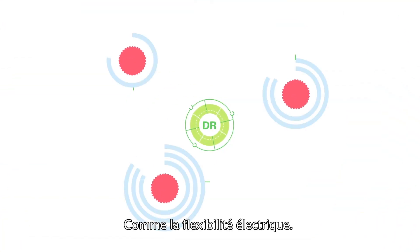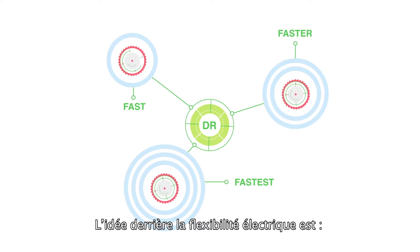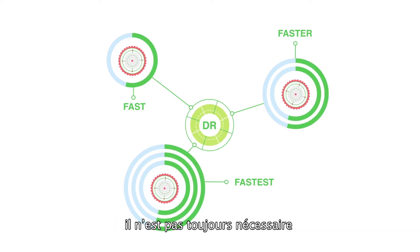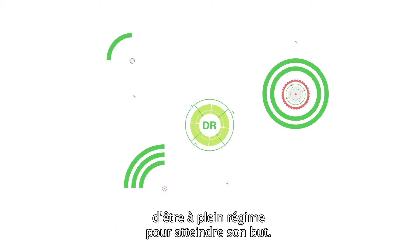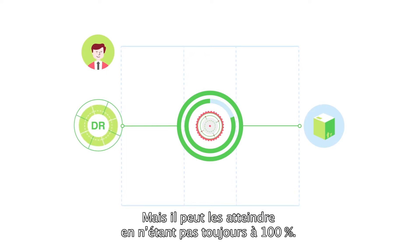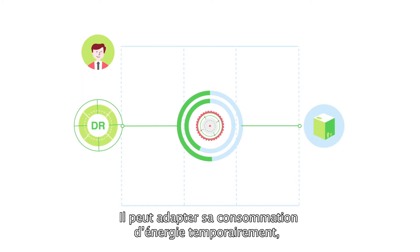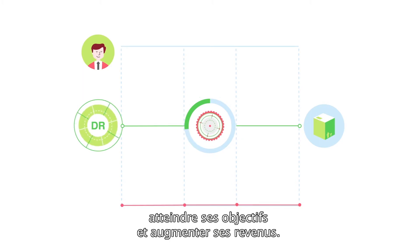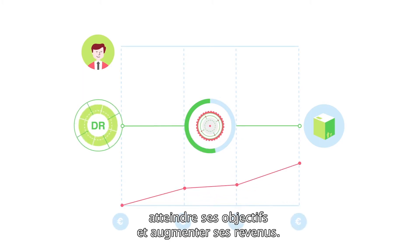Like demand response. The idea behind DR is that you don't always need to go full speed to get where you're going. Take Richard. He has production targets, but he doesn't need to be running full steam 100% of the time to reach them. He can adjust his energy consumption temporarily, meet his target, and generate extra revenue.